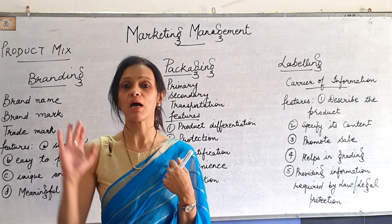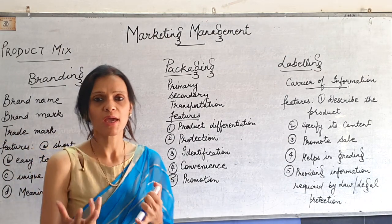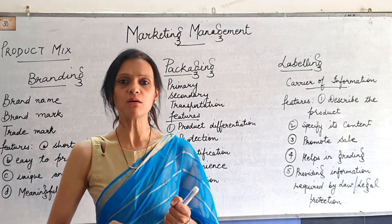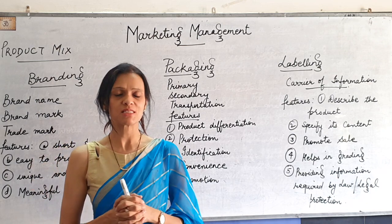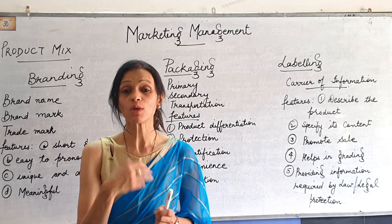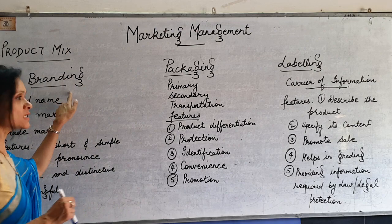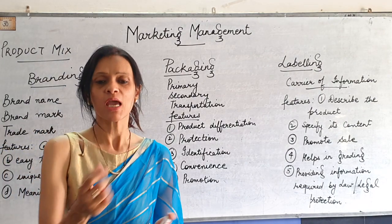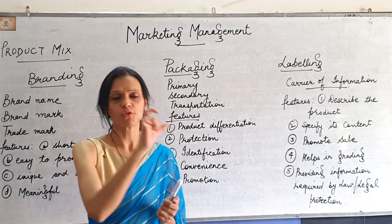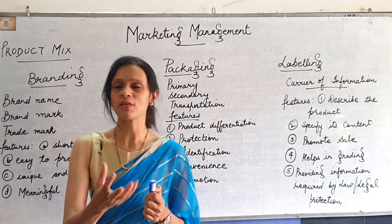Today we will be talking about the product mix. This product mix means deciding which product to choose. What we will be learning is that once the businessman has decided his product, what steps he has to follow and what things he has to think about. Number one, he has to think about branding, which simply means that the product should be given some name. The process of giving a name is known as branding.